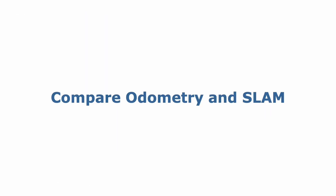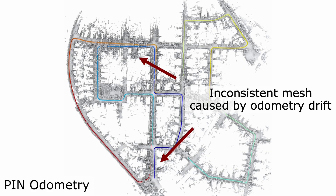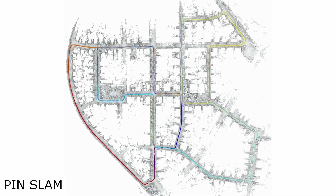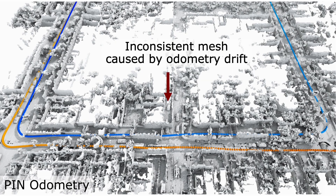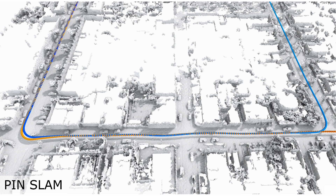We can also compare pin odometry with PinSLAM to show the benefit of loop closures in globally consistent maps. What you see here is a LiDAR odometry trajectory where you can see the odometry drift. Through the loop closure, we can eliminate that drift and build globally consistent maps. Here you see a mesh including inconsistencies due to the odometry drift. Once a loop closure is performed, this gets eliminated and we obtain a globally consistent mesh.